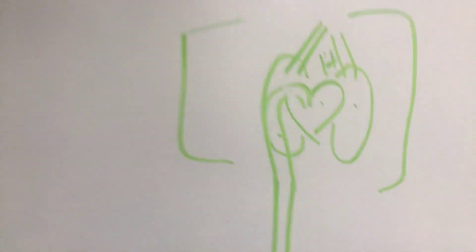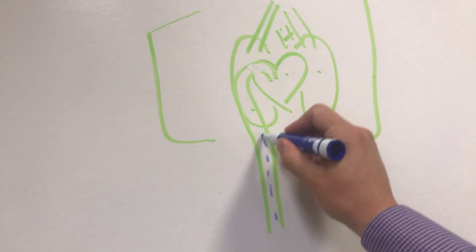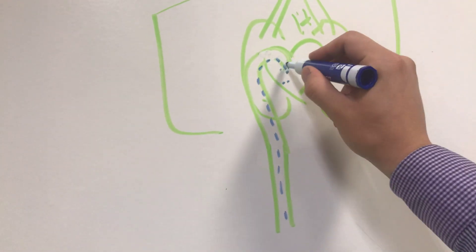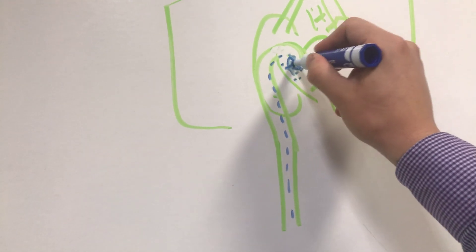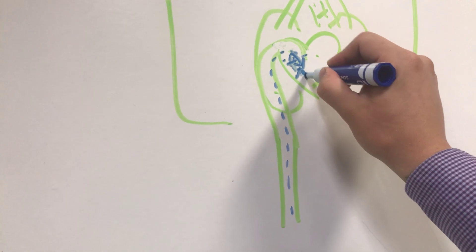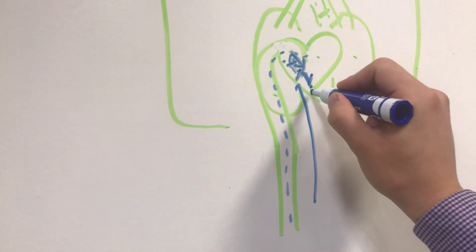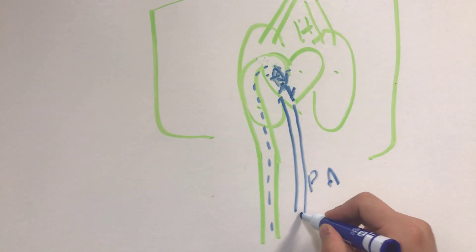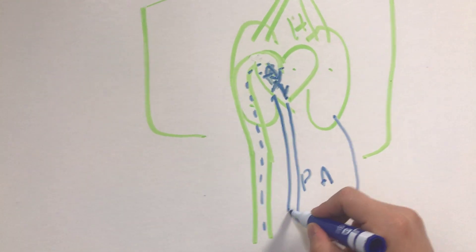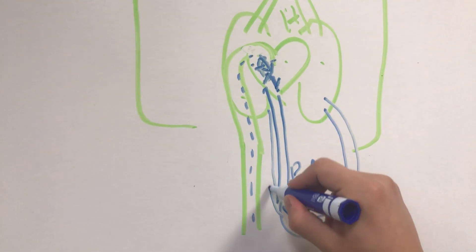For example, going back to this drawing: when blood returns to the heart, on the right side of the heart, blood will travel from the atrium. Blood is received in the right atrium, then goes down to the right ventricle. From the right ventricle, via the pulmonary artery, that blood is then taken to both lungs.